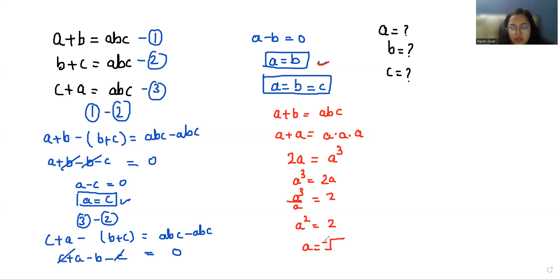So the value of a is plus or minus square root of 2, and a equals b and b equals c. So a is plus or minus root 2, b is also plus or minus root 2, and c is also plus or minus root 2. So these are the values of a, b, and c.